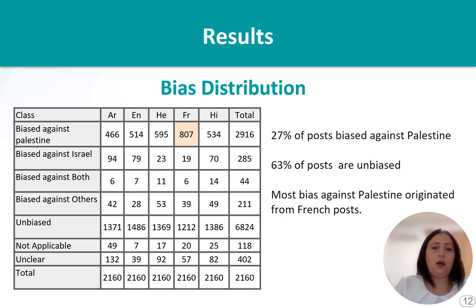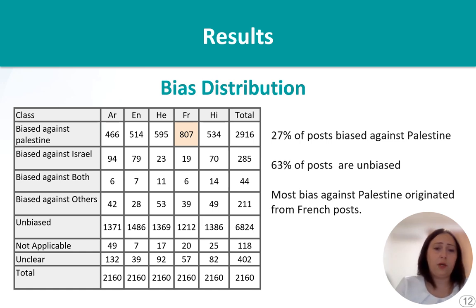Our bias distribution shows that 27% of posts are biased against Palestine and 63% of posts are unbiased, while most bias against Palestine originated from French posts. As we can see from this table, the distribution of bias classes among the five languages.